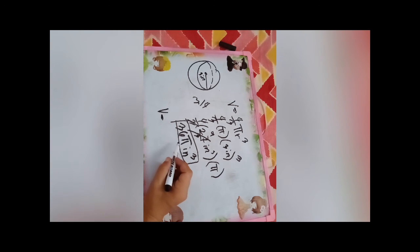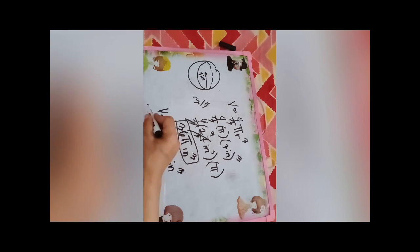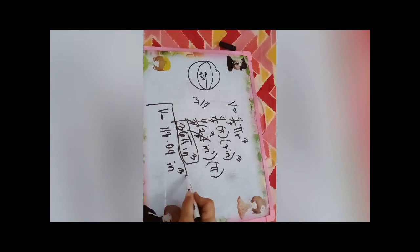So we use 3.14 as π. So 36 times 3.14 equals 113.04 inches cubed. So this is the volume of a sphere.